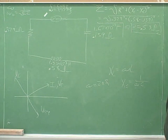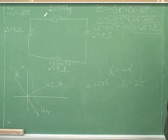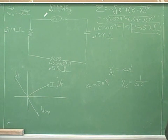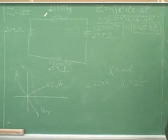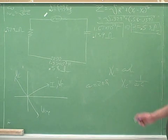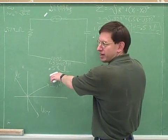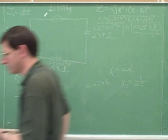We know we're not at the resonant frequency here. How do we know we're not at the resonant frequency? What would have happened at the resonant frequency? The two reactances would have canceled out. That's right. We already knew that these were not the same, so we're not at the resonant frequency.